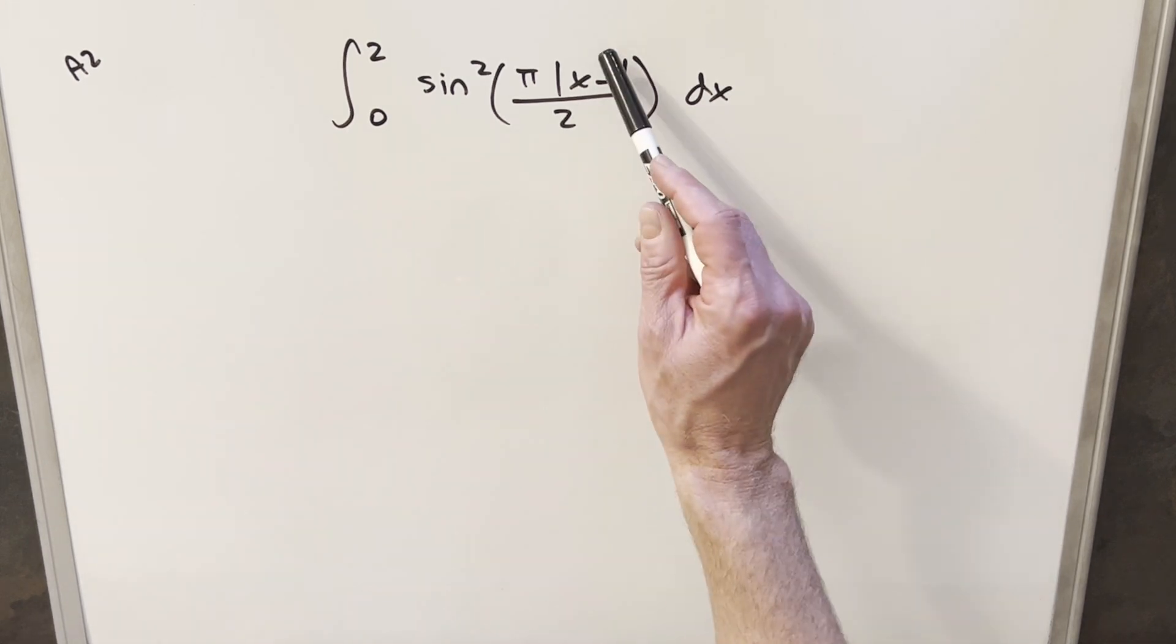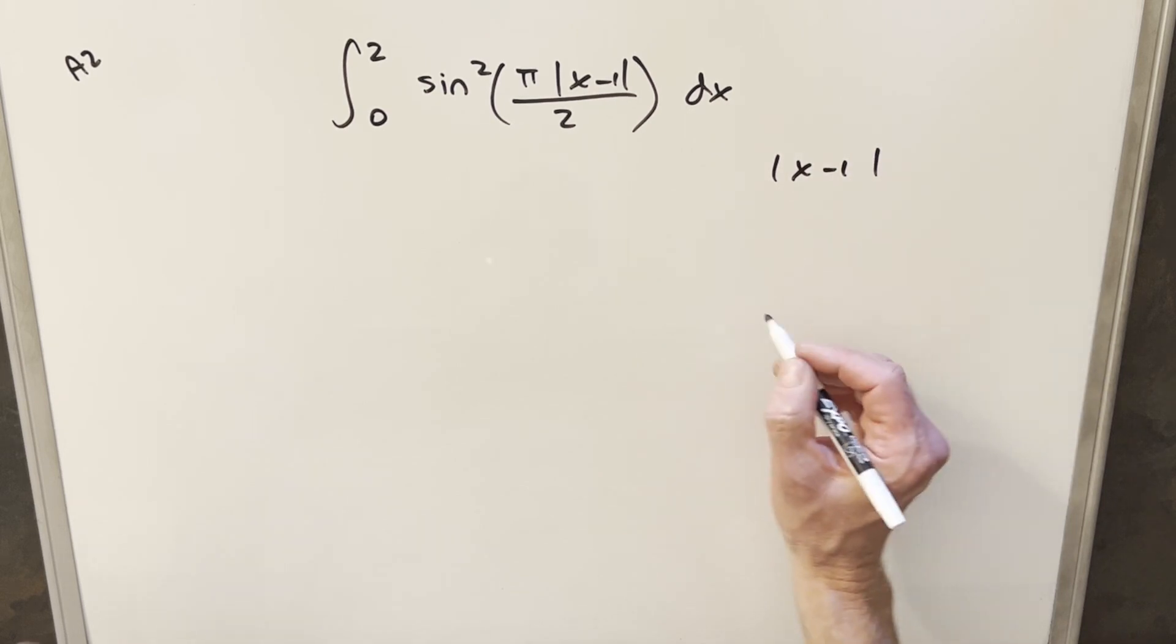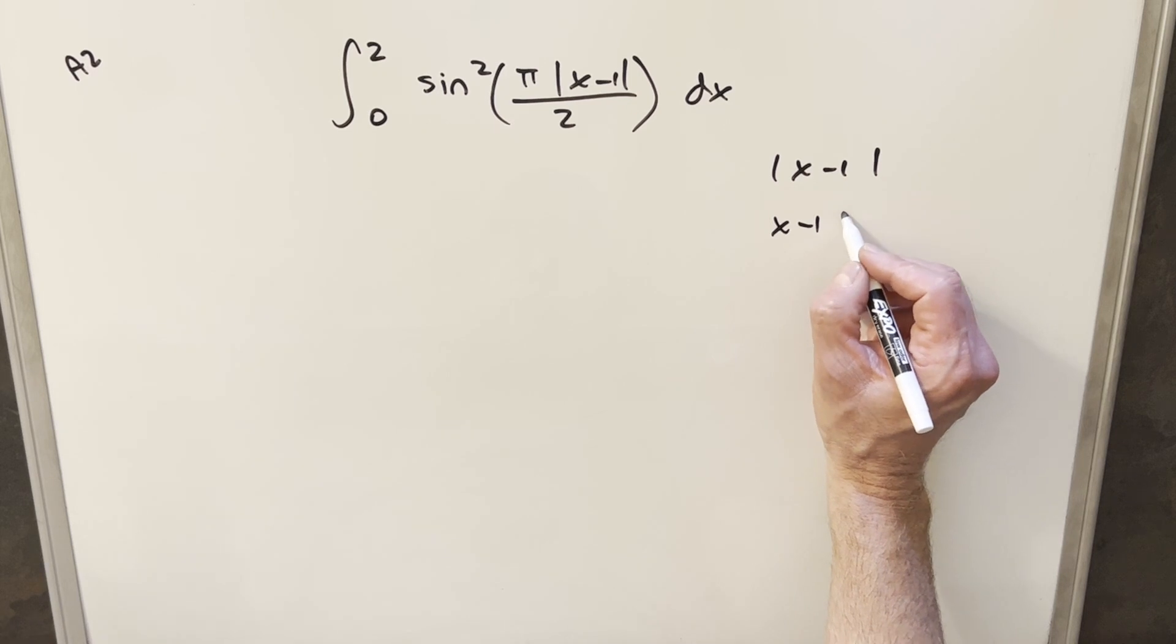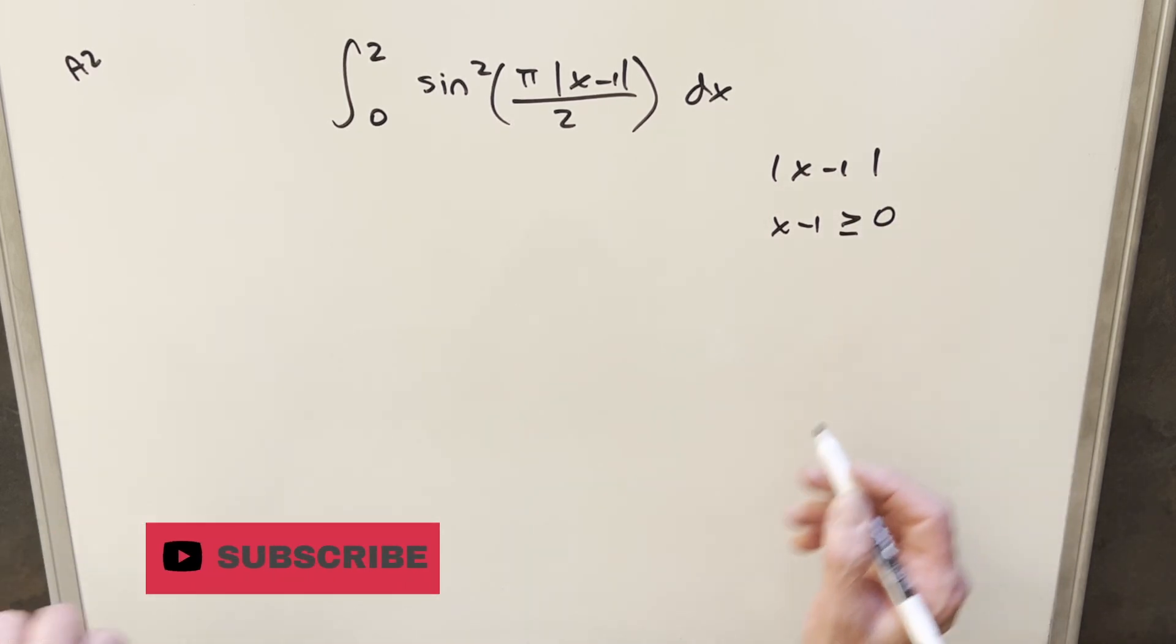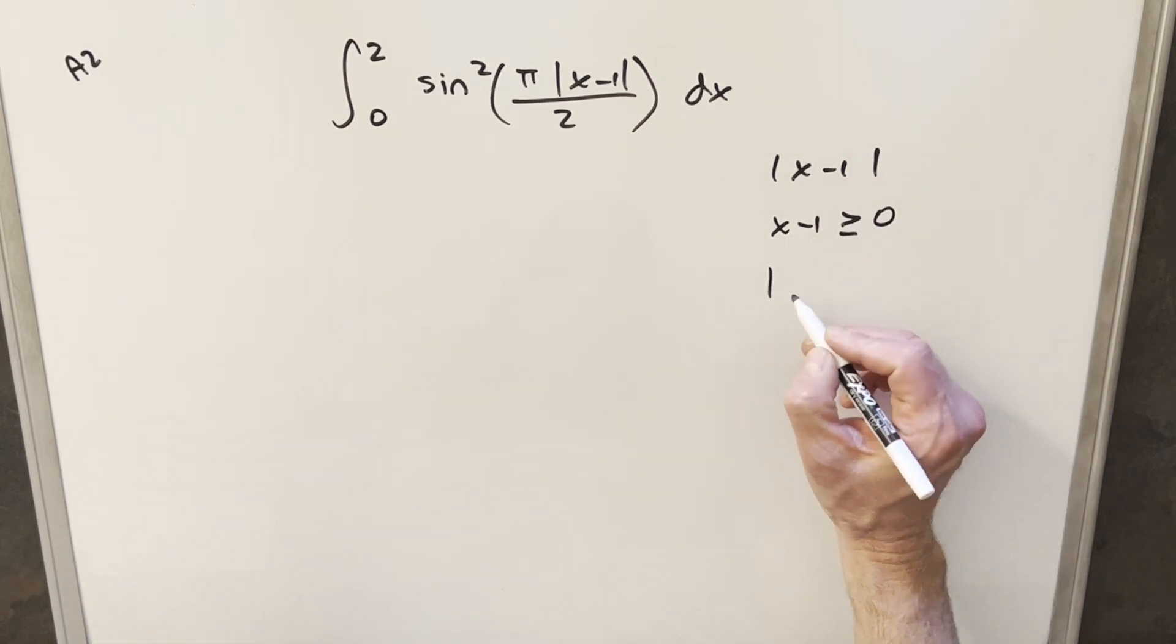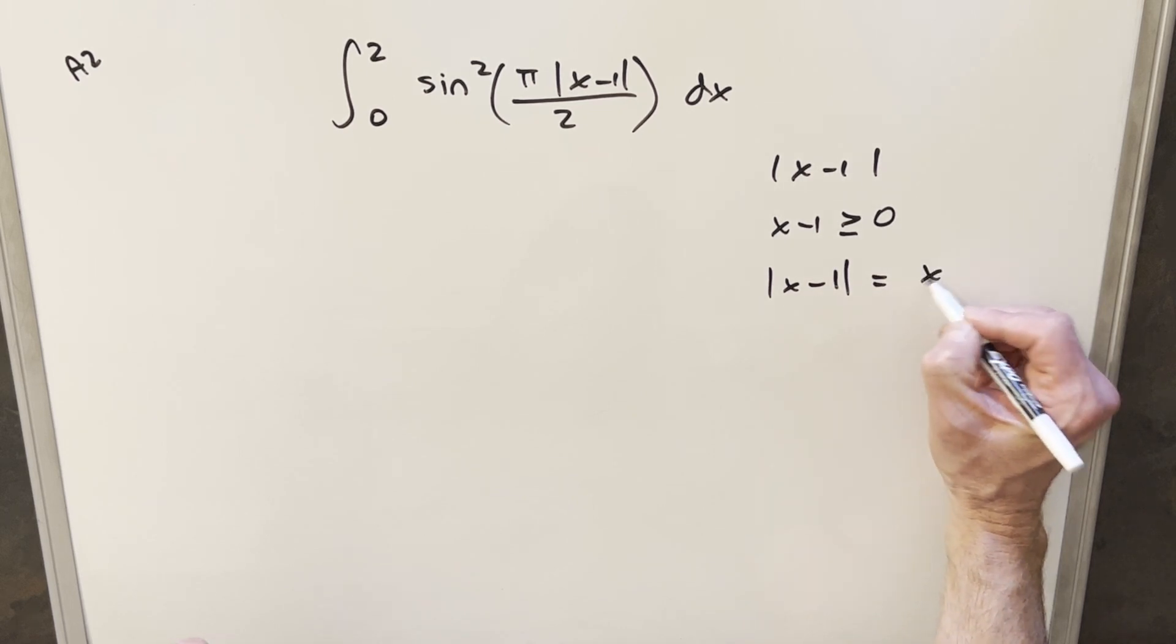So to get started with this, I'm really going to just focus on absolute value of x minus 1. The way we can deal with absolute value is we can deal with it in two cases. We can look at this as what happens when x minus 1 is greater than or equal to 0. Well, in this case, we're saying it's always positive, so then we can just drop the absolute value. So in this case, the absolute value of x minus 1 is just going to be x minus 1.